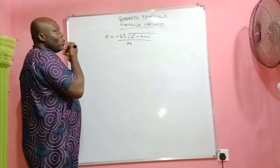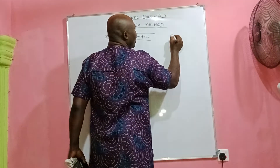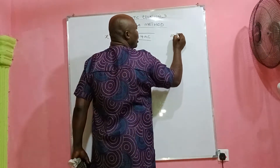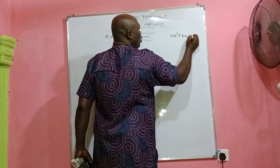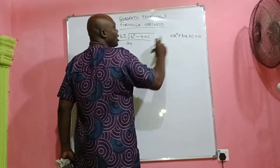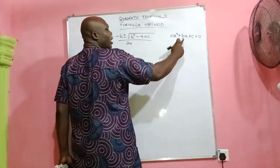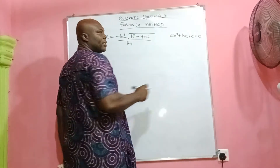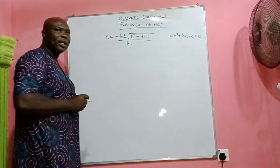When you have the quadratic equation ax² + bx + c = 0, the 'a' is the coefficient of x squared, the 'b' is the coefficient of x, and the 'c' is the constant.